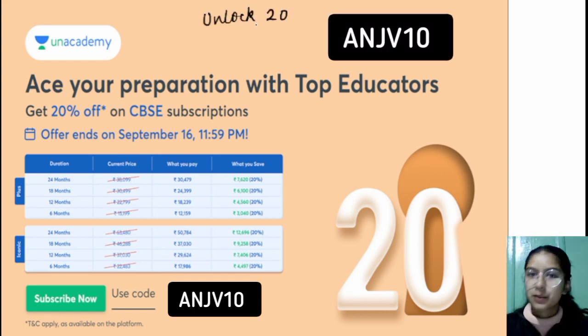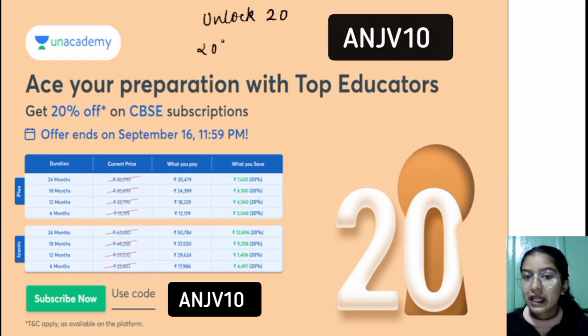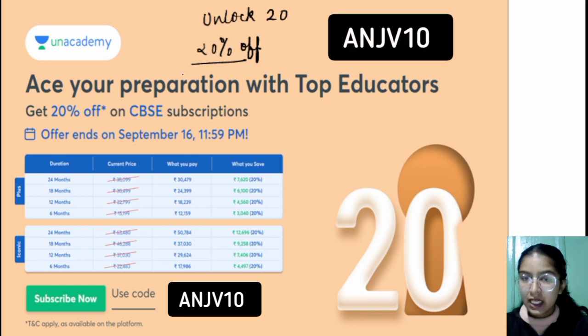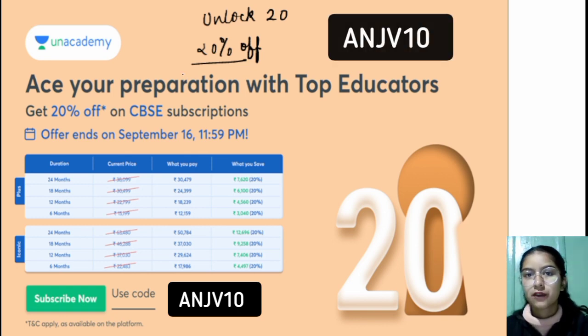Which means, if you purchase any Unacademy subscription, you will get a direct 20% discount by using my code, which is ANJV10. So, we basically have two subscriptions of Unacademy. One is the plus one, the other is the iconic one.